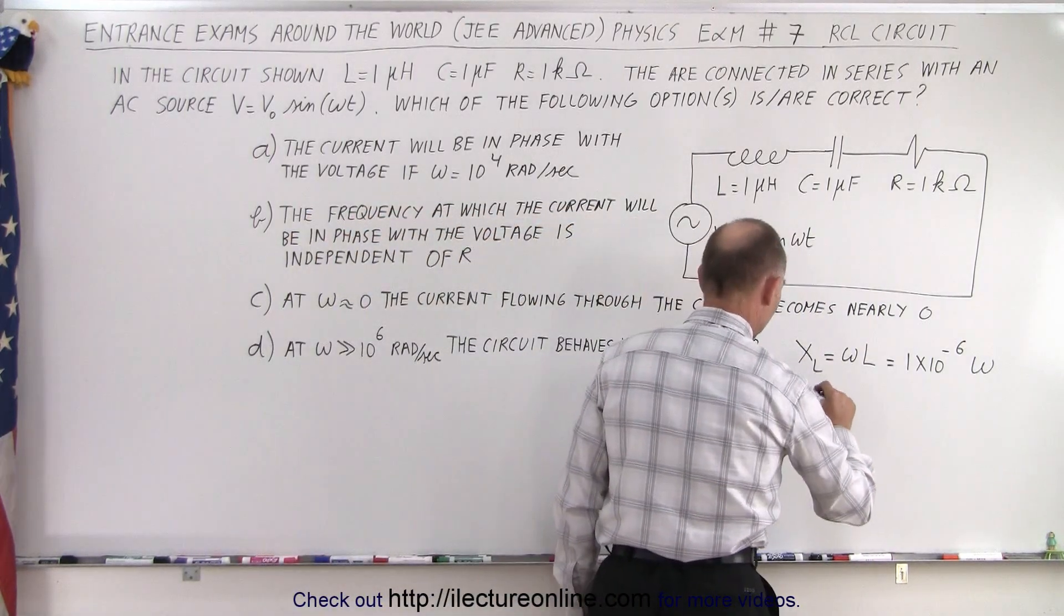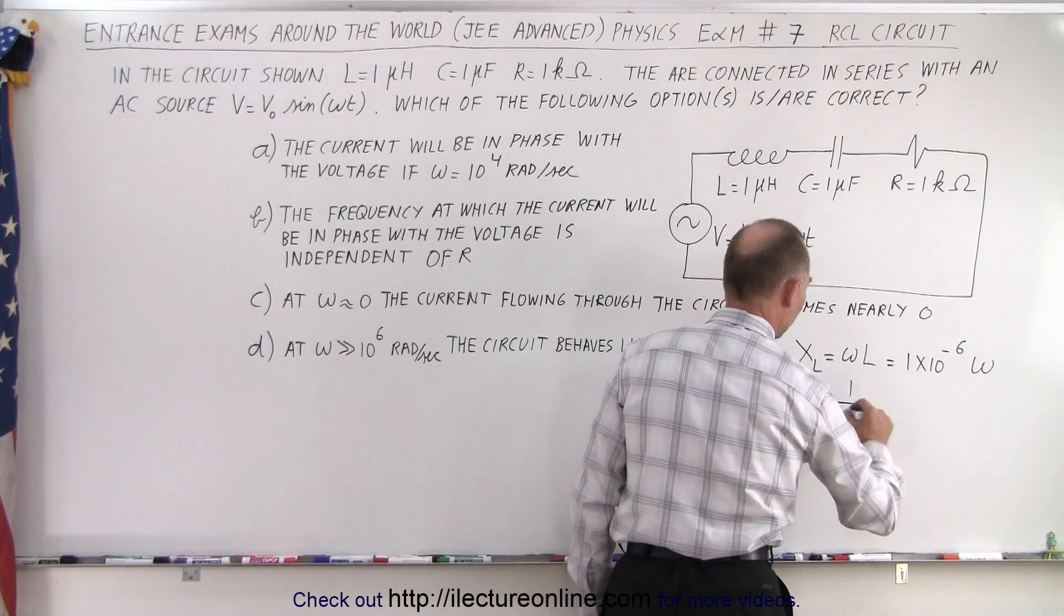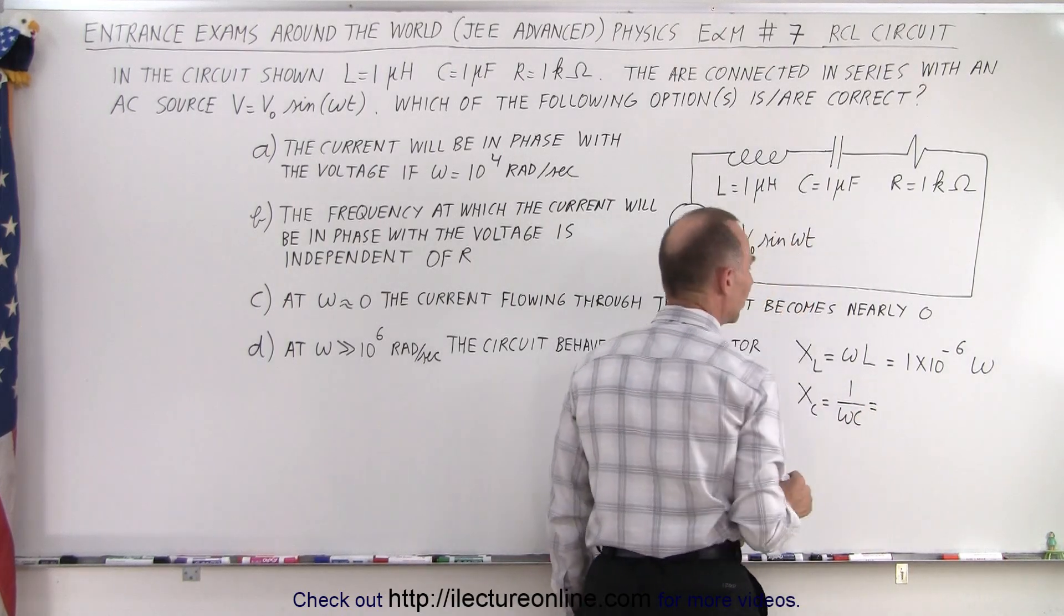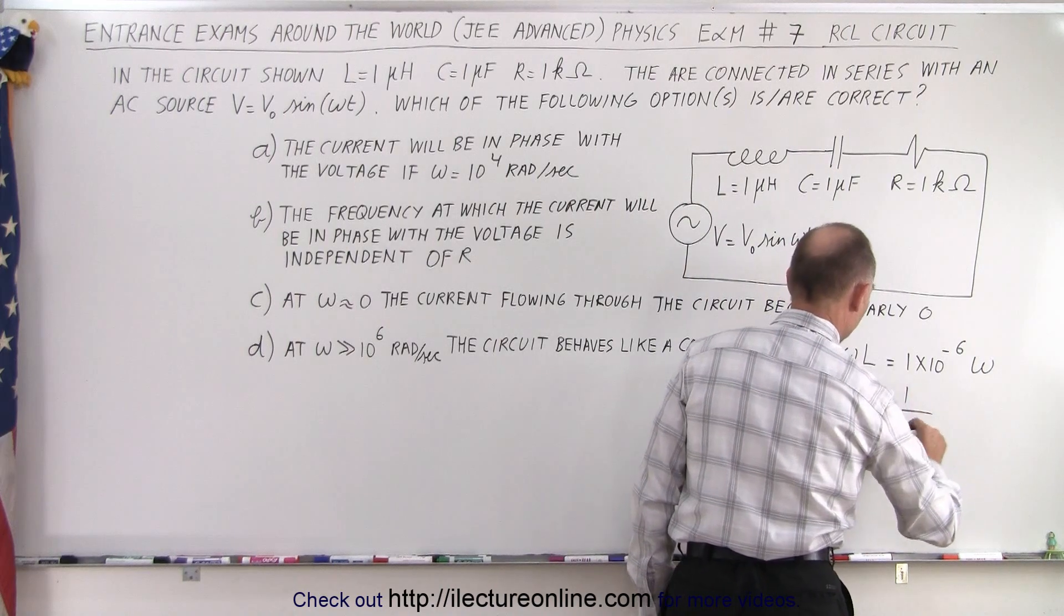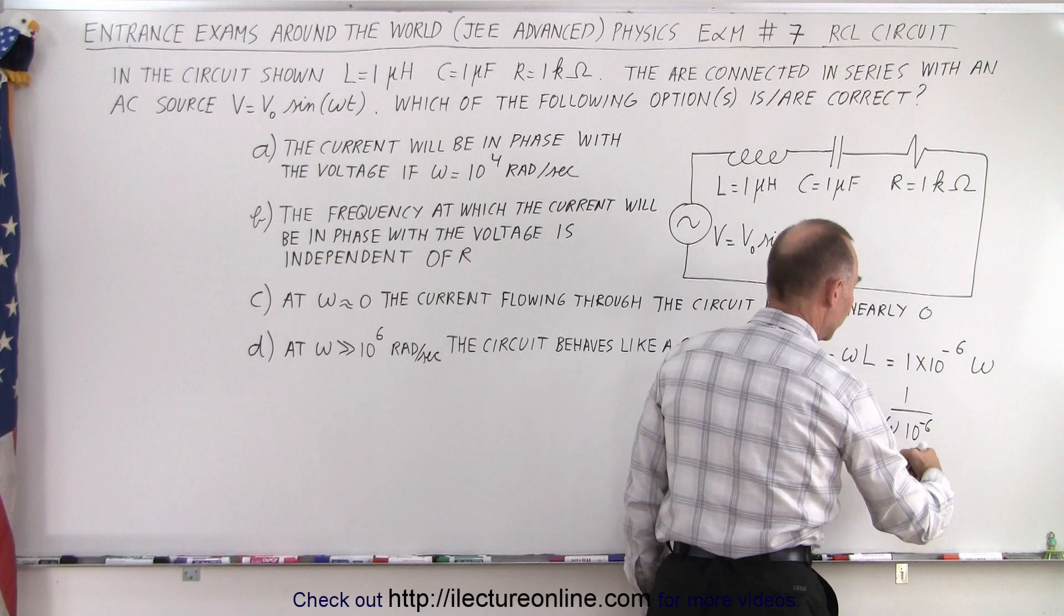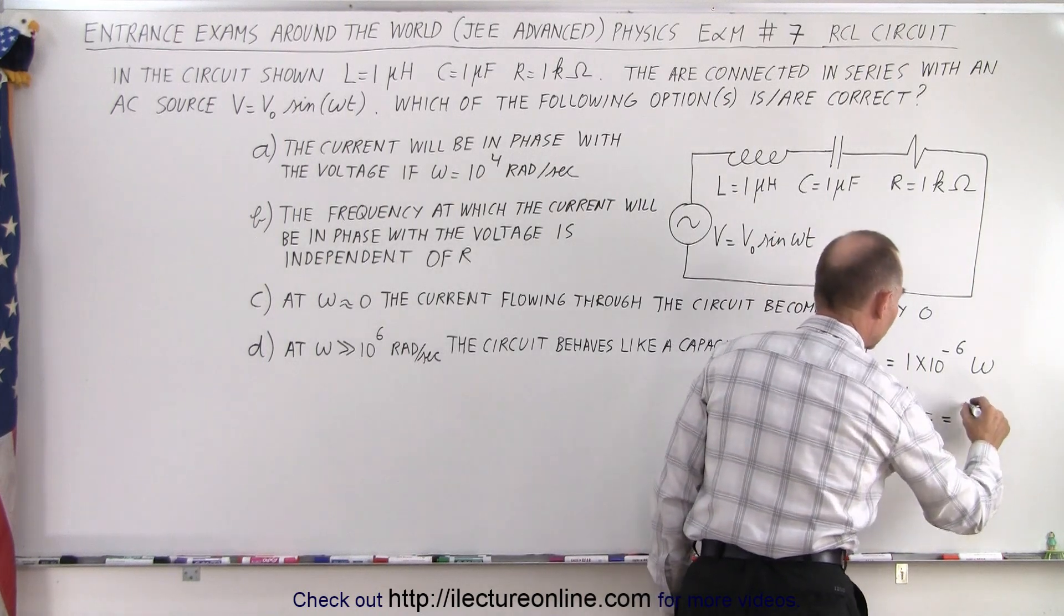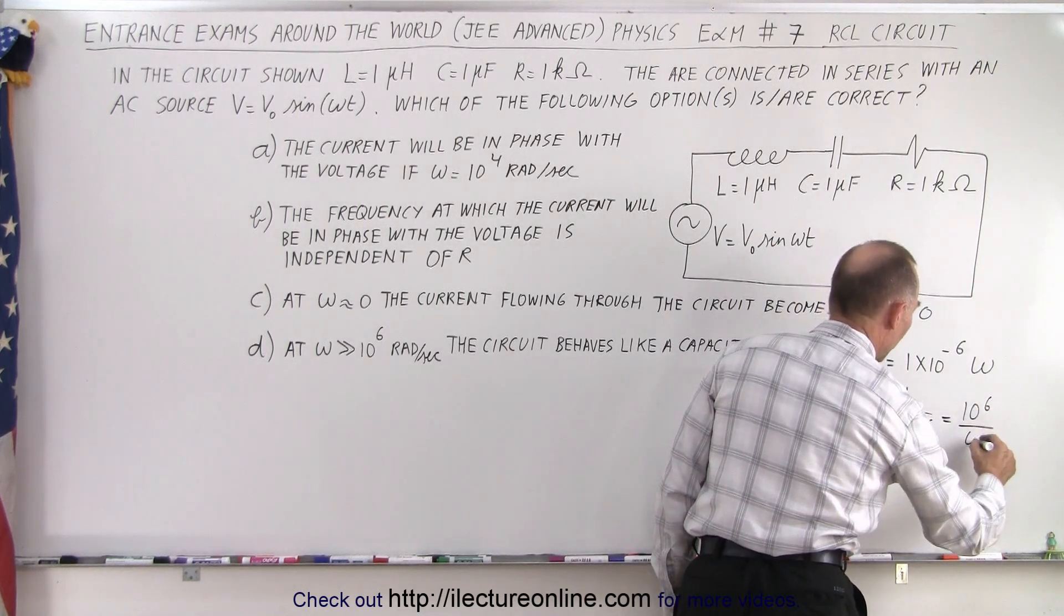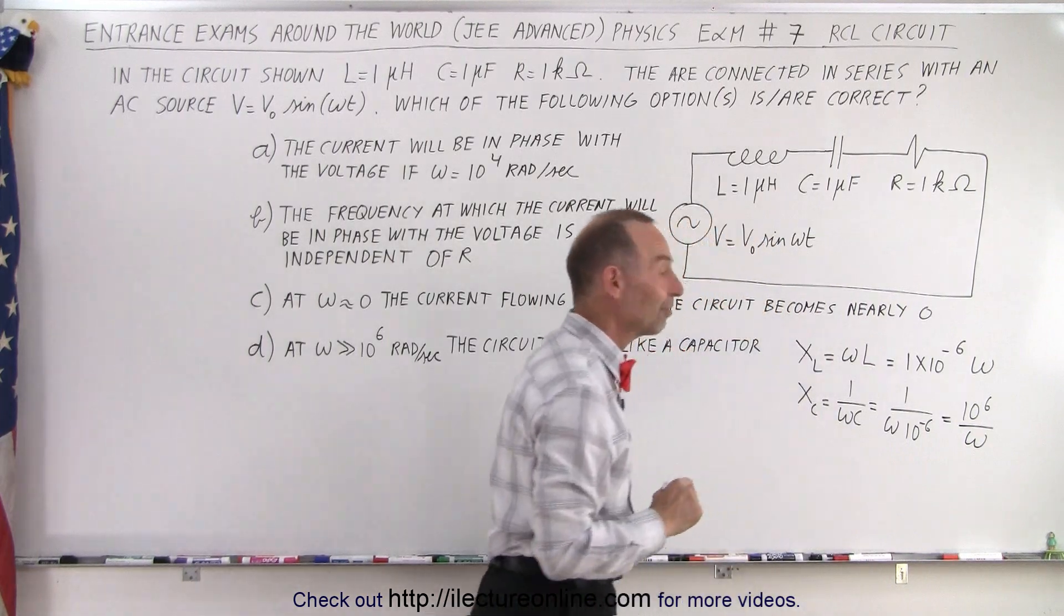And for the capacitor, X_C equals 1 over omega C, which is 1 over omega times 10^-6. However, that's in the denominator, so X_C equals 10^6 over omega. So that's the capacitive reactance.